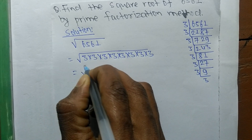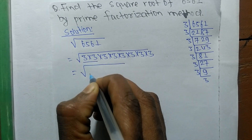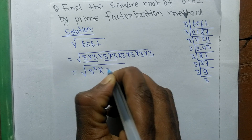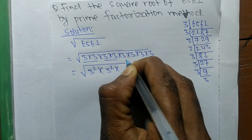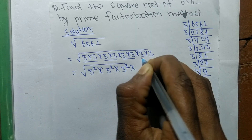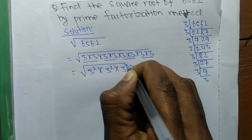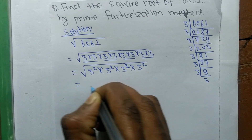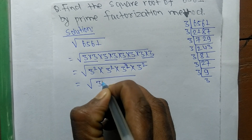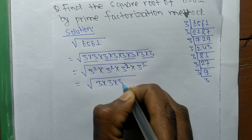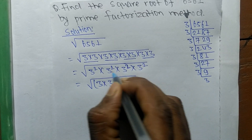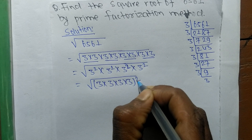Now we write all these multiples in square form: 3 into 3 is 3 squared, 3 into 3 is 3 squared, 3 into 3 is 3 squared, and 3 into 3 is 3 squared. So we can write it as 3 squared times 3 squared times 3 squared times 3 squared, all under the square root.